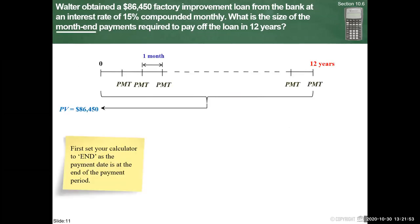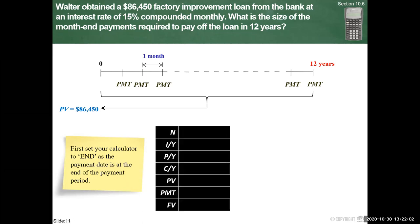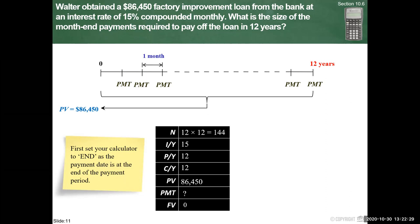For the Texas BA II Plus calculator, make sure the calculator is set to END for month-end payments. Enter N = 144 (12 years × 12 months), nominal interest = 15%, payments per year = 12 for monthly, compounding per year = 12 for monthly compounding, present value = 86,450, future value = 0, then CPT for payment. You'll get the same answer of $1,297.51.